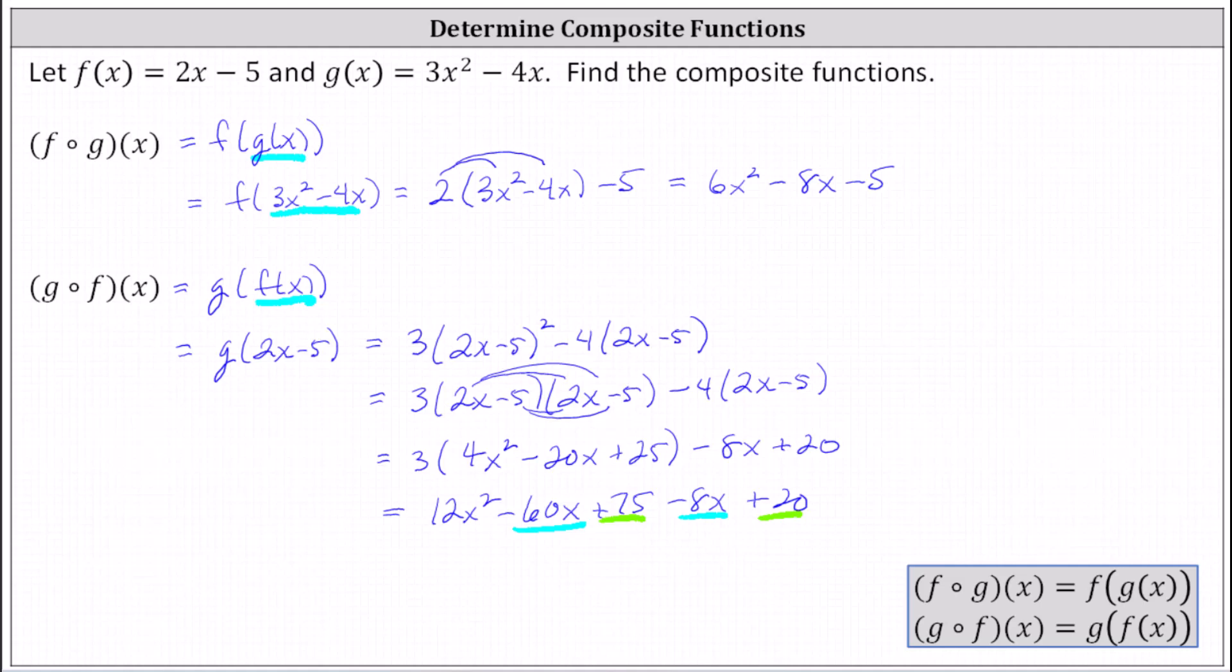g of f of x equals 12x squared, and negative 60x minus 8x gives us minus 68x, and 75 plus 20 is 95, giving us plus 95. g of f of x equals 12x squared minus 68x plus 95. I hope you found this helpful.